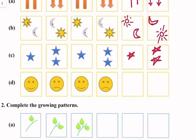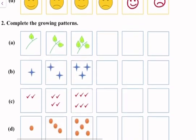In part D there's a happy face, then a sad face. The pattern will be happy, sad, happy, then sad. Question number two: